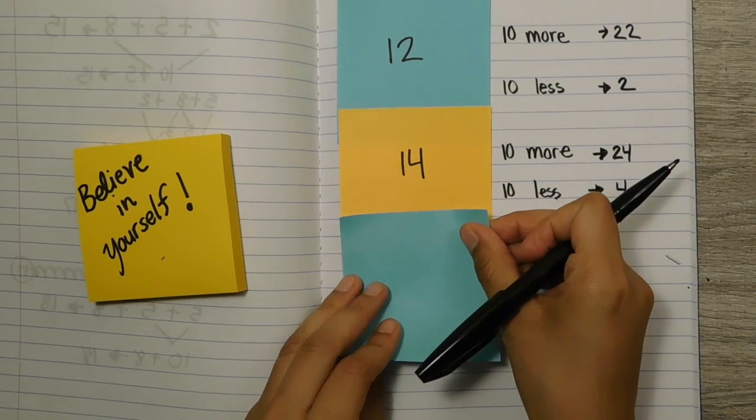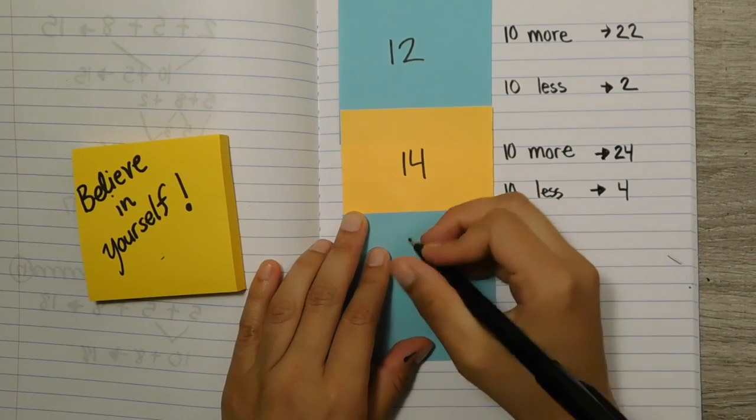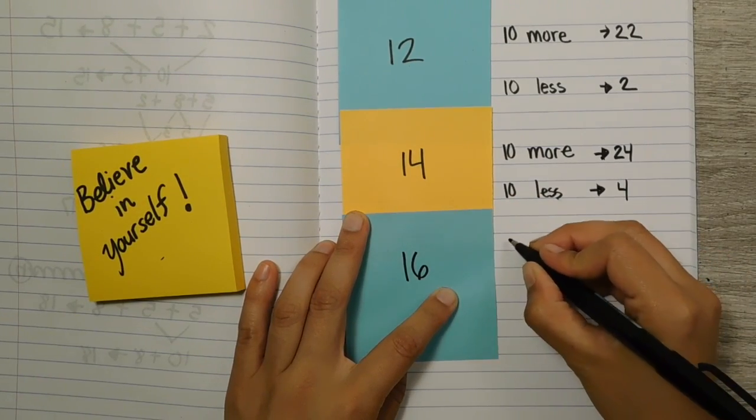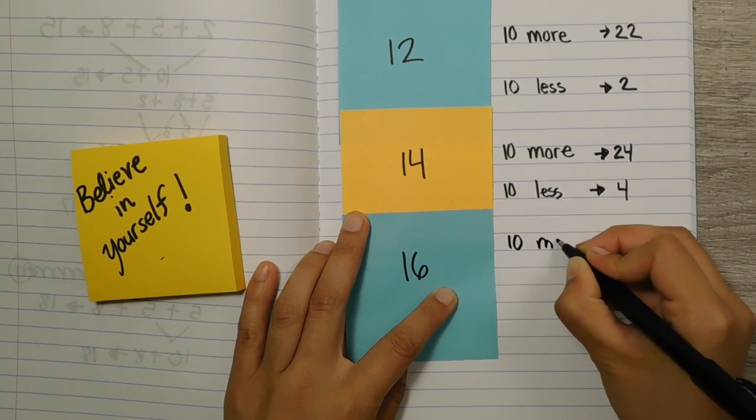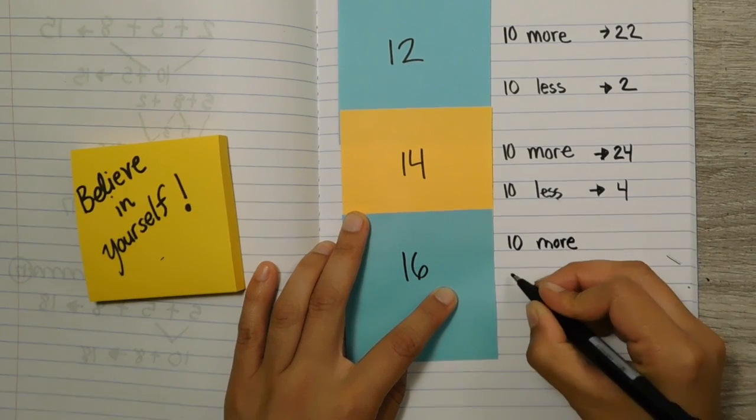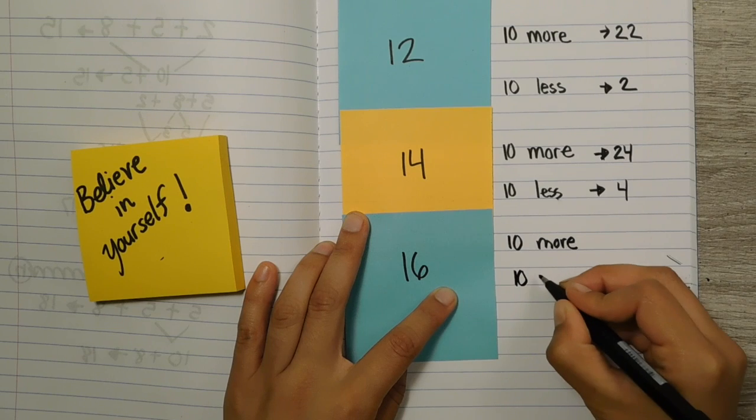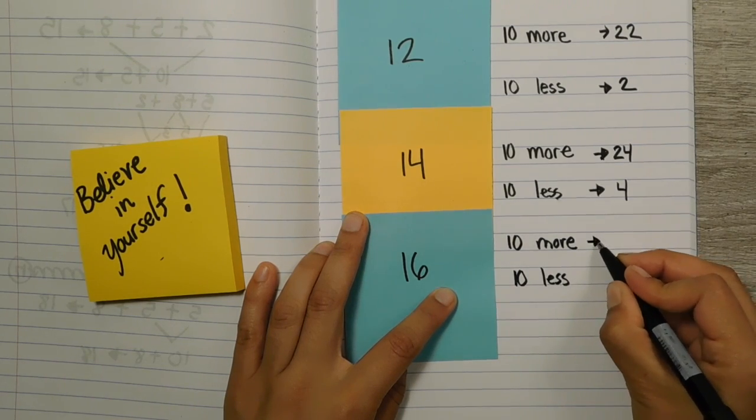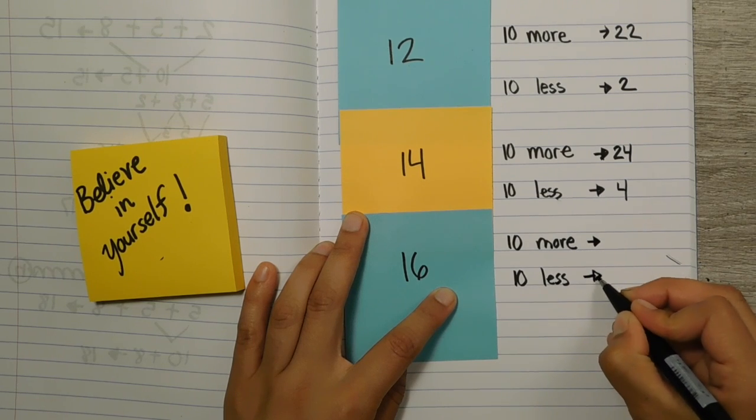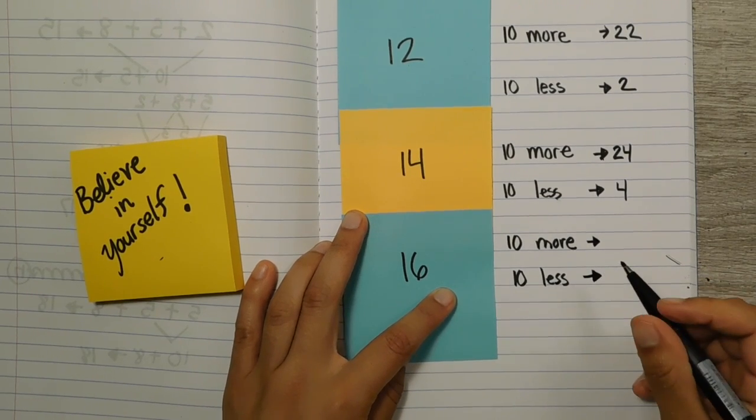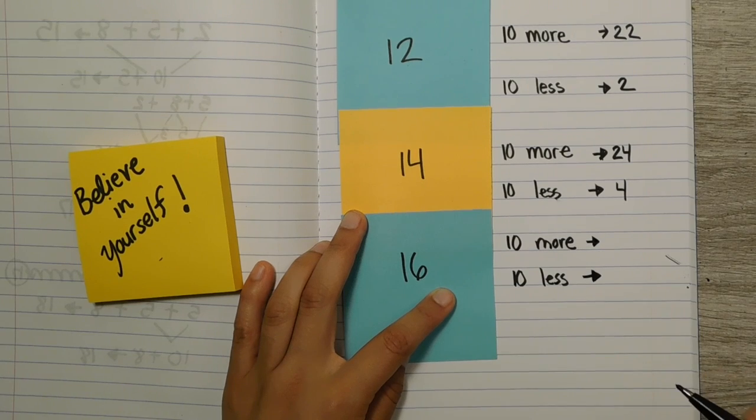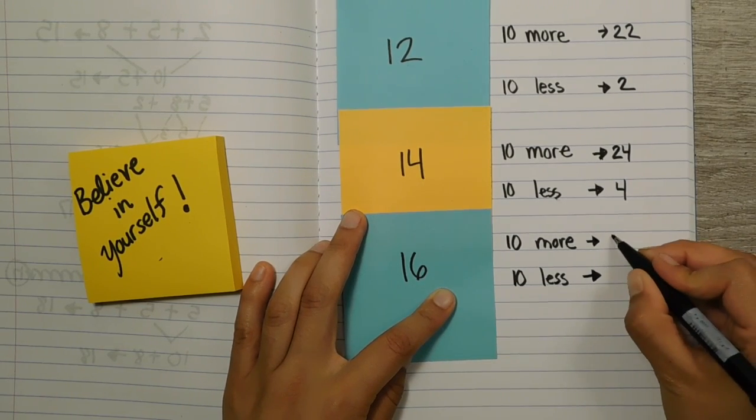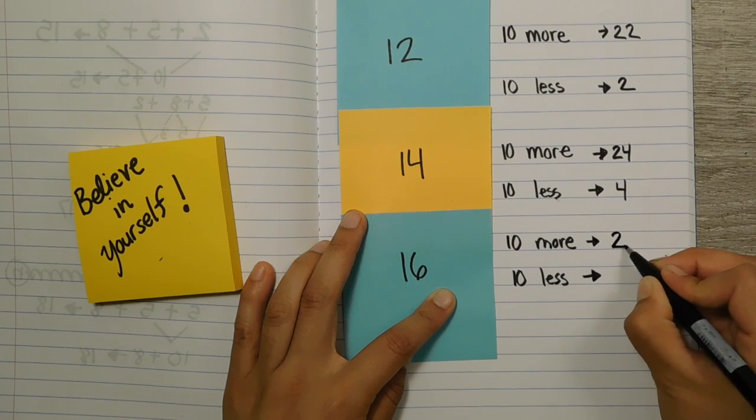So let's practice with the number 16. Ready? So think with 16, what would be 10 more? And what would be 10 less? And again, I think some of you already noticed a pattern with the answers, but it's still wonderful to practice your thinking. So 16 and 10 more, what would be the answer? 26. Great work.